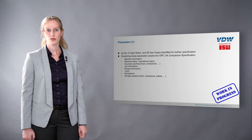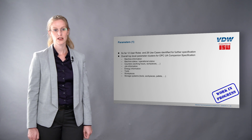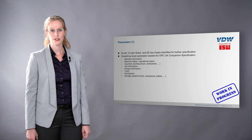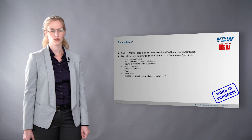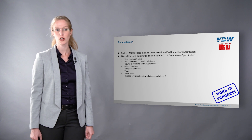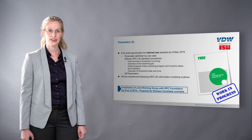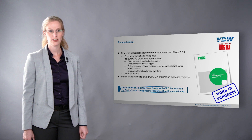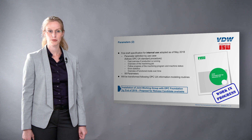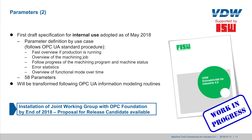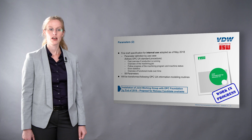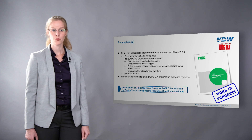For parameters, we have already defined 12 user roles and 28 use cases to specify further. We have broadened the field by including not only machine information and machine status, but also job information, tool information, and workpiece information. In the first draft internally published in May this year, we defined 58 parameters covering five use cases, ranging from a fast overview of production running to error statistics and an overview of functional modes over time. We are currently transforming this information into an OPC UA information model and will be installing a joint working group at year-end with the OPC Foundation, with a proposal for a release candidate available for discussion.